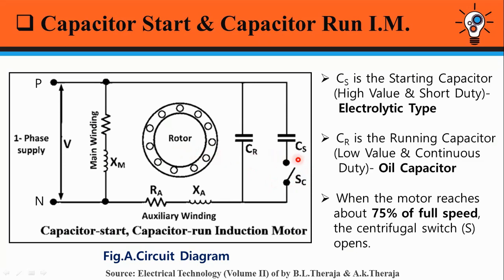A capacitor CS, known as the Starting Capacitor, is connected in series with a centrifugal switch SC. So CS remains in the circuit only at start and it is switched out during normal running. When the motor reaches a speed of about 75% of full speed, the centrifugal switch SC opens and CS is disconnected from the circuit. CS is of electrolytic type — it has a high value but short duty.